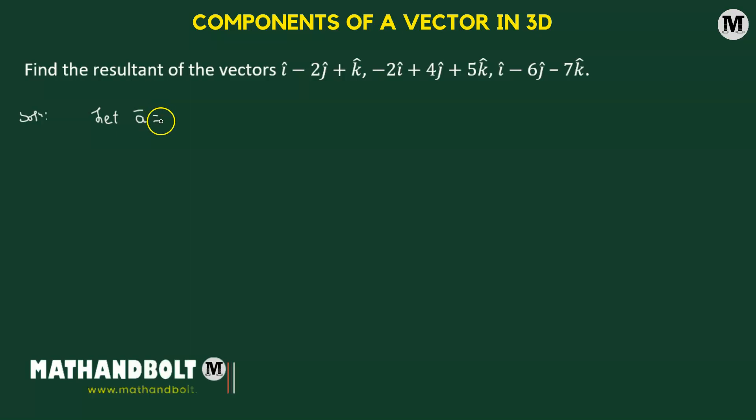which is represented by I cap minus 2J cap plus K cap. B vector is represented by negative 2I cap plus 4J cap plus 5K cap.